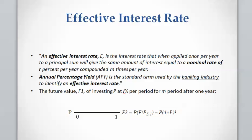Going back to the example in the previous video: if you deposit $100 in a bank account that gives you 6% interest compounded monthly, you will receive $106.17 per year. So you can guess the effective interest rate here is approximately 6.17%.